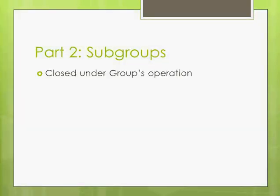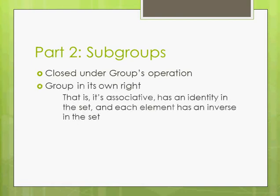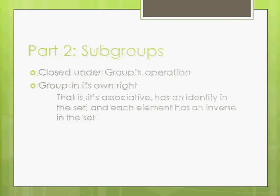So what does it mean to be a subgroup? Well, it's got to be closed under the group's operation, and it's got to be a group in its own right. That means it needs to be associative, have an identity, and each element has to have an inverse. And it's a set.